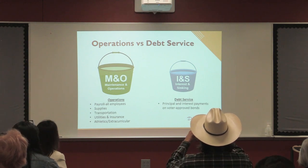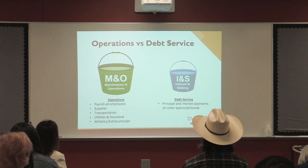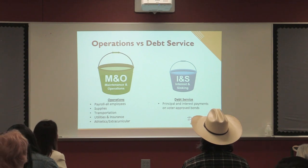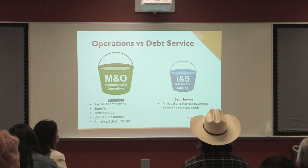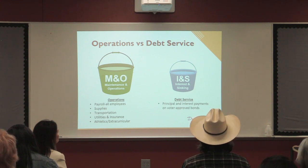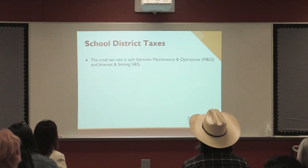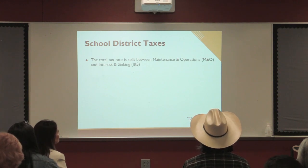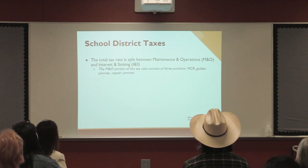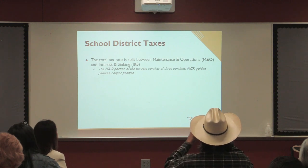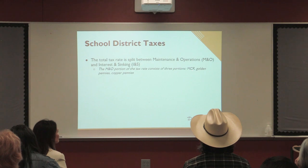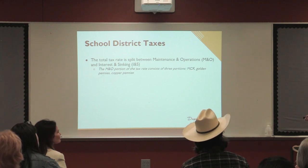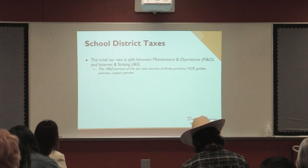There are two buckets of tax collections. On the M&O side, these tax dollars fund daily operations — all salaries across the district, all supplies, everything it takes to run the district — and these are subject to recapture. The other side of the tax rate is what we dedicate to paying off voter-approved bonds, and those dollars are not subject to recapture. The total tax rate splits into M&O and I&S. On the M&O side, it's further split into the MCR — the maximum compressed rate — plus golden pennies and copper pennies.